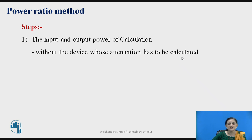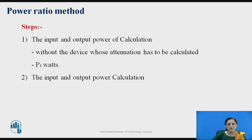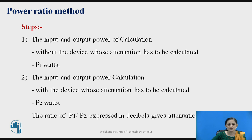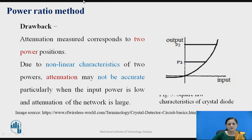In the power ratio method, the input and output power is first calculated without the device under test in Setup 1 — let us call that power P1 watts. In Setup 2, the same measurement is done with the device added — let that power be P2 watts. The ratio P1 / P2 expressed in decibels gives the attenuation, so attenuation = 10 log (P1 / P2) in decibels.